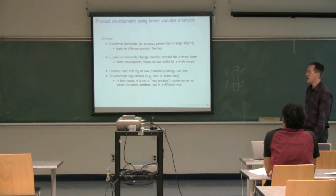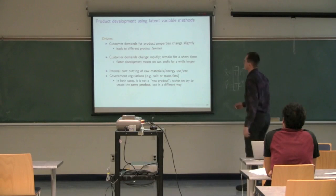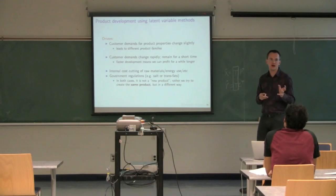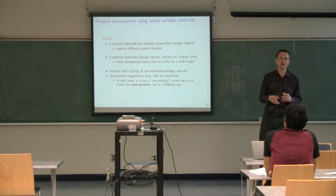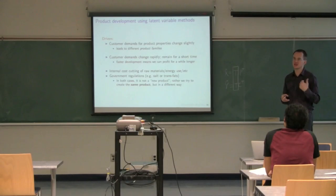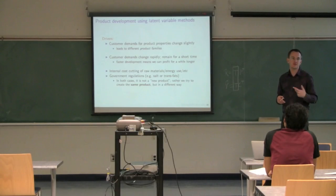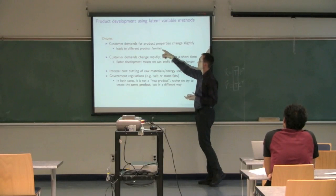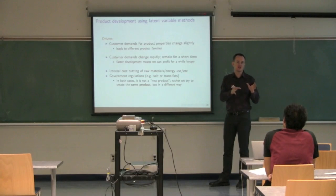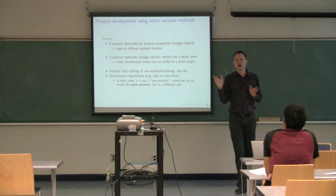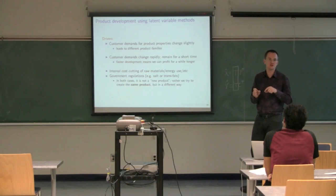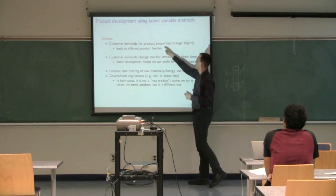What drives all of this is that it's very common for customers to want very minor changes on an existing product. A customer might want a product that uses less energy, is cheaper, or has some other desirable properties. Suppliers will often have product families — for example, product EX1, EX2, EX3 — because previous customers have asked for minor tweaks along the line.